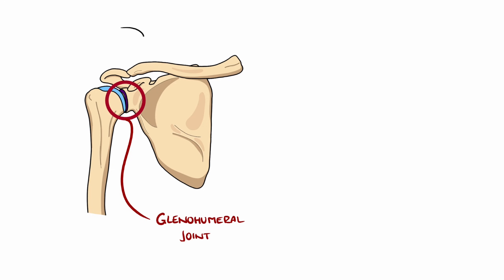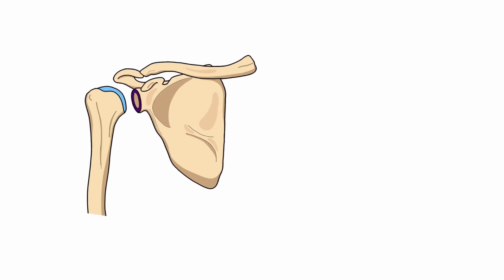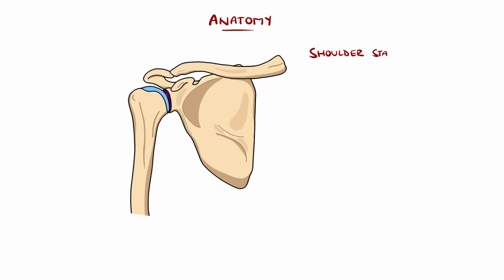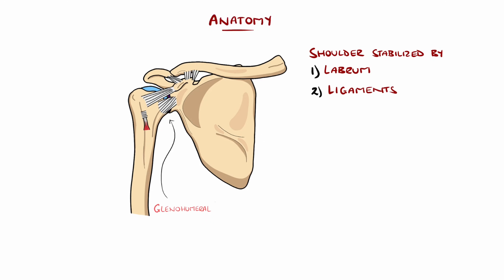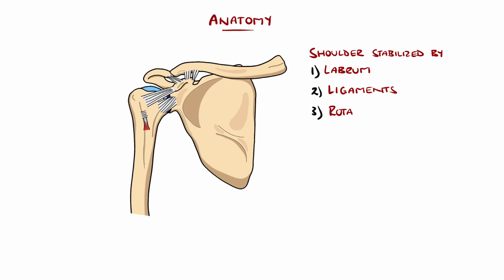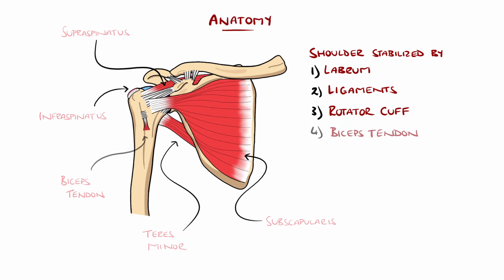The glenohumeral joint, along with the acromioclavicular and sternoclavicular joints, makes up the shoulder. It is stabilized by the labrum, a ring of fibrocartilage that better anchors the head of the humerus to the glenoid fossa, as well as multiple ligaments like the glenohumeral, coracohumeral, coracoacromial, and coracoclavicular ligaments, and four rotator cuff muscles: the supra- and infraspinatus, teres minor, and subscapularis.